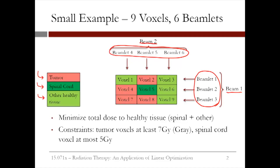Our objective is to minimize the total dose to healthy tissue, both to the spinal cord and to the other healthy tissue. We have two types of constraints. The first is that the dose to the tumor voxels must be at least 7 gray, which is the unit of measure for radiation. Our second constraint is that the dose to the spinal cord voxel can't be more than 5 gray, since we want to be careful to protect the spinal cord.